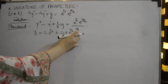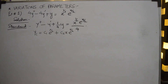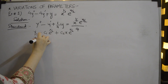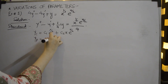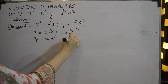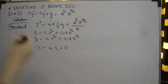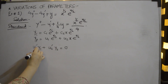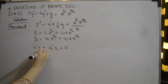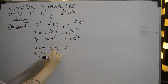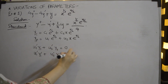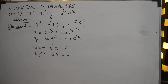Now we select yp, which is totally dependent upon the two functions y1 = e^(x/2) and y2 = x*e^(x/2). These two are linearly independent functions. We take yp = u1*e^(x/2) + u2*x*e^(x/2), where u1' and u2' are the unknowns.